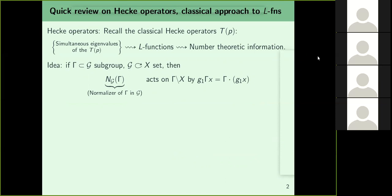Before going ahead I want to recall the classical theory, since I'm told you all attended a workshop on modular forms recently, though not every detail about Hecke operators and L-functions may be fresh. I won't recall all details but just the main ideas. How do the classical Hecke operators arise? There is a general principle: you have a group G acting on a set X, and Γ is a subgroup.